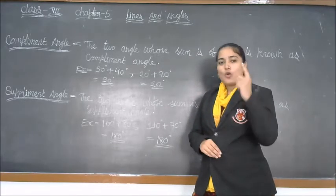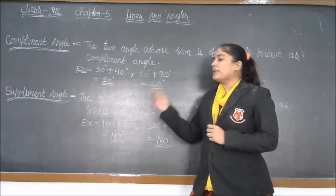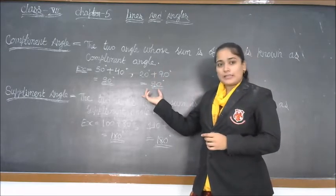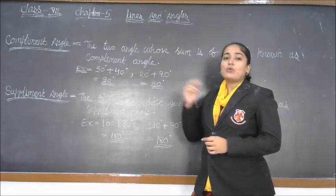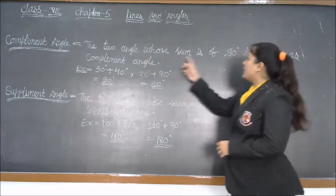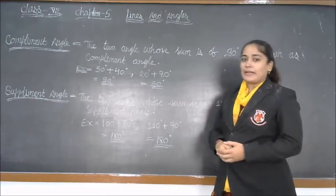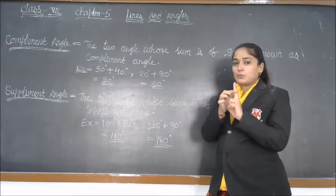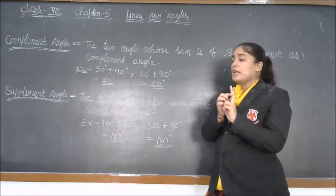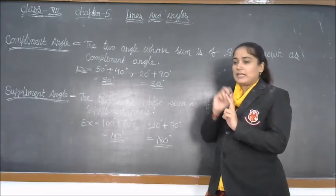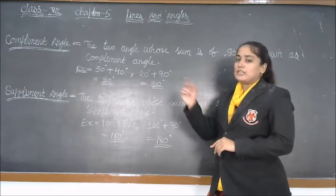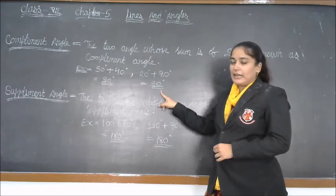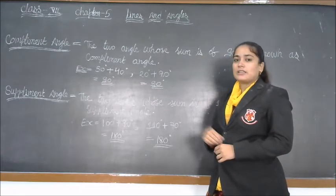There are two more types of angle: complementary angle and supplementary angle. In complementary and supplementary angles, we need two angles — we add two angles together. The two angles whose sum is 90° are known as complementary angles. For example, 50° and 40° add up to 90°, so they are complementary. Similarly, 20° and 70° also add up to 90°, so they are complementary.